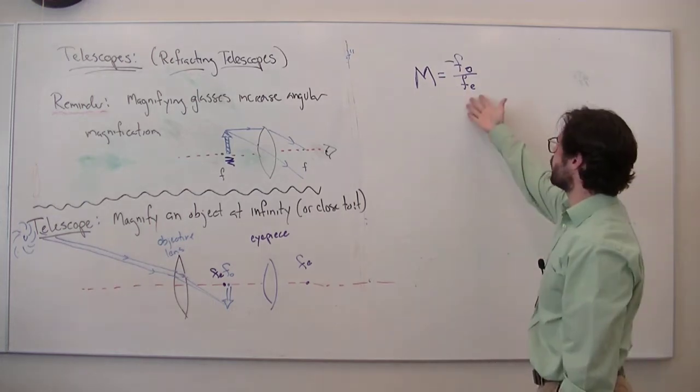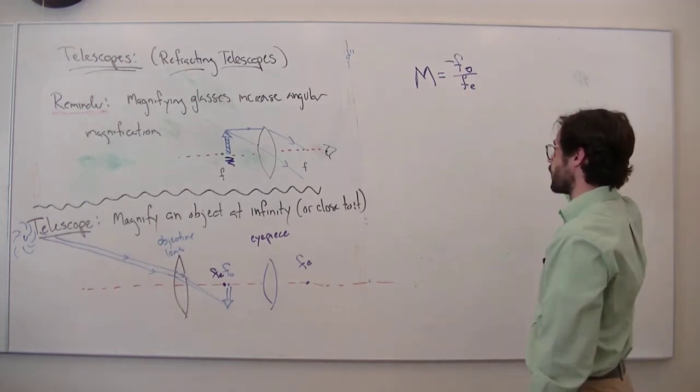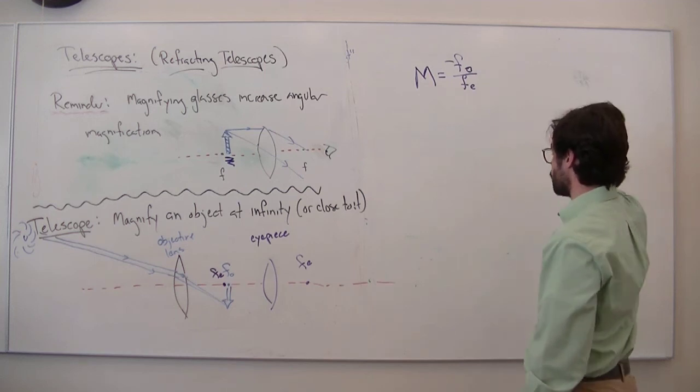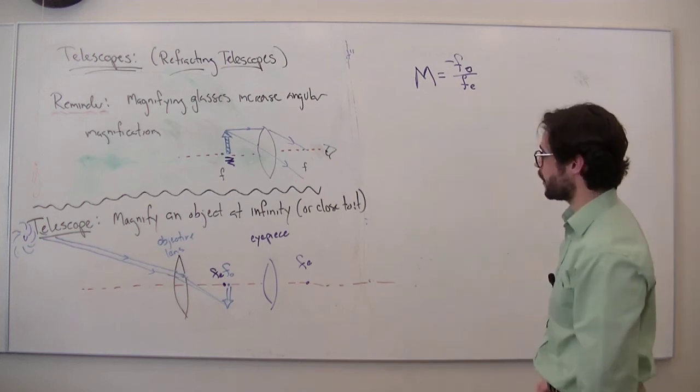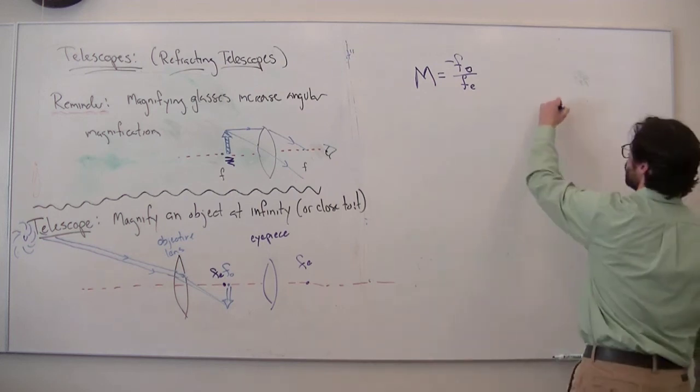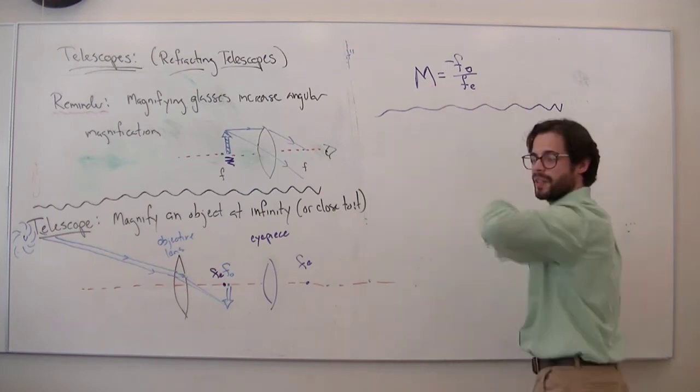So you could get this up to, I think, one of the biggest refracting telescopes, the Yerkes Telescope. It's got like a 40-inch mirror. I think this gets up to like 190 magnification, 190 times. But you don't have to know this, just kind of a cultural note.